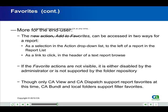More for the end user: the new action Add to Favorites can be accessed in two ways for a report — as a selection in the action drop-down list to the left of a report in the report list, and as a link to click in the header of a text report browse. If the favorite actions are not visible, it is either disabled by the administrator or is not supported by the folder repository. Though only CA View and CA Dispatch support Report Favorites at this time, CA Bundle and Local Folders support filter favorites.